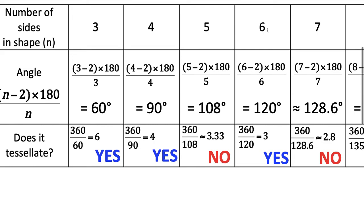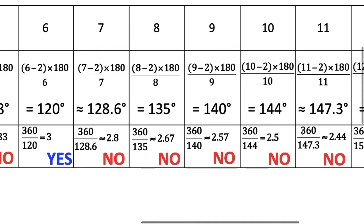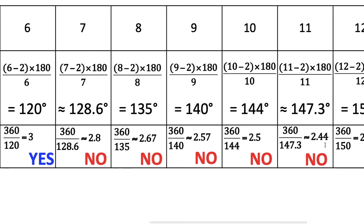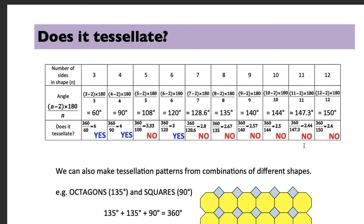Hexagons do tessellate: 360 ÷ 120 = exactly 3, fitting three hexagons around a point. All polygons with seven or more sides — up to twelve — also fail to tessellate exactly. So the only regular polygons that tessellate on their own are equilateral triangles, squares, and regular hexagons.